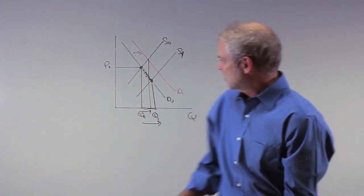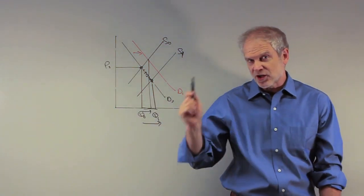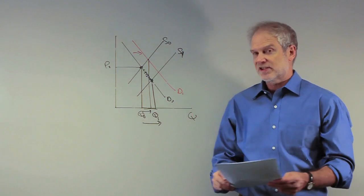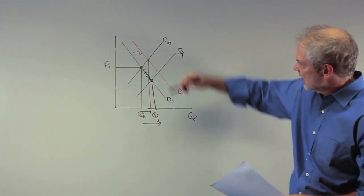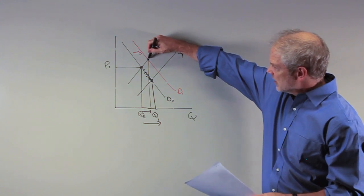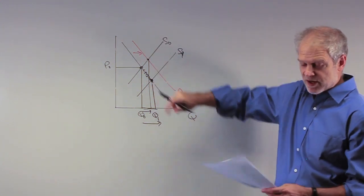So again, the distinction between shifts in demand and supply and changes in quantity demanded and quantity supplied is more than just semantic. This actually helps you kind of understand what's going on. Because one final point, this is associated with an increase in price, this is associated with a decrease in price. And that's why it matters.